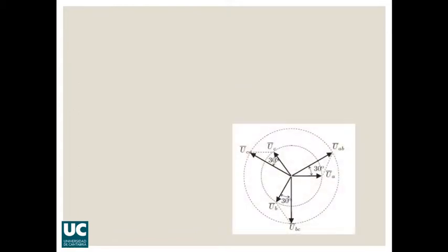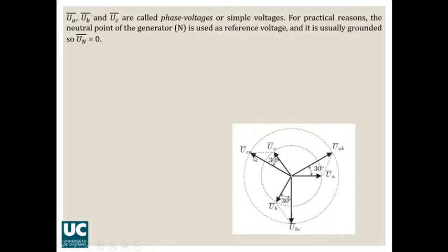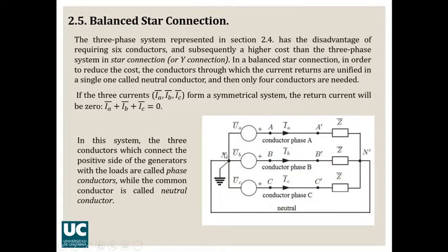Here we have a representation of what we call the phase voltages: UA, UB, and UC. In general, we are going to use the neutral point of the generator as reference voltage. So that point is usually grounded, that means that it is connected to Earth. We had that represented here in the previous slide, where you have point N and its ground connection.